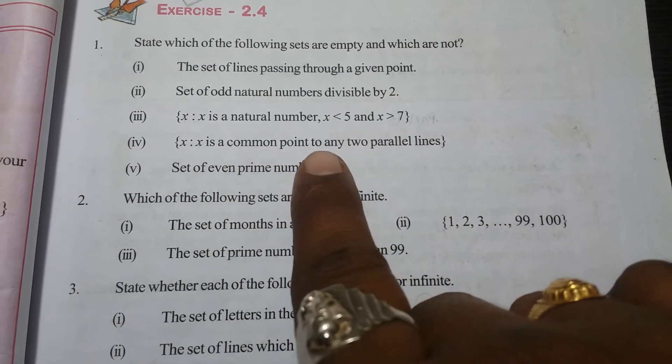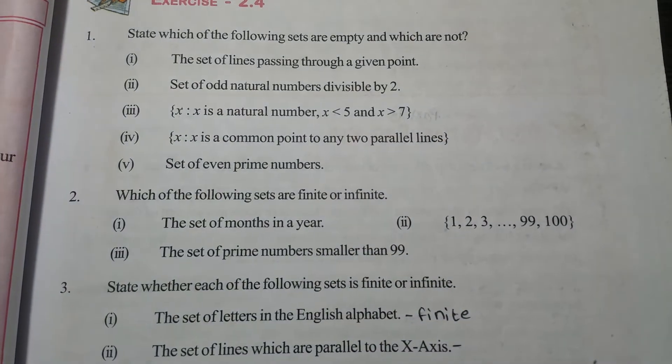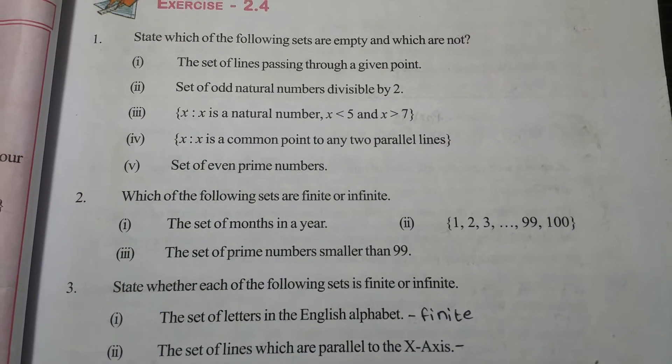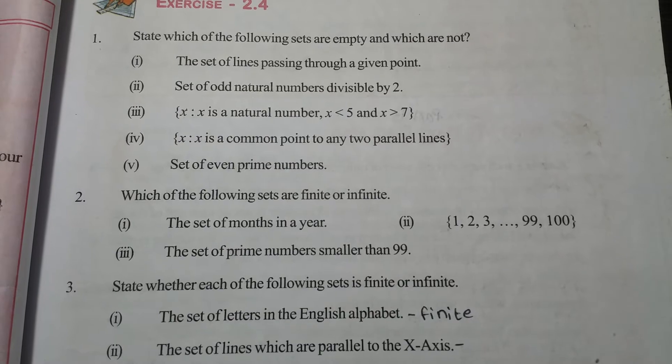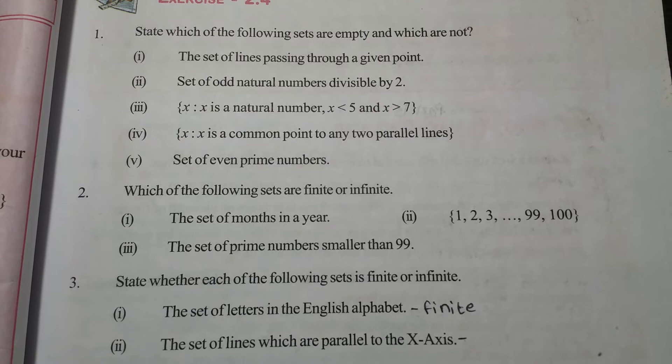X such that x is a common point to any two parallel lines. If two lines are parallel, there are no common points present between two parallel lines. Therefore, it is an empty set.